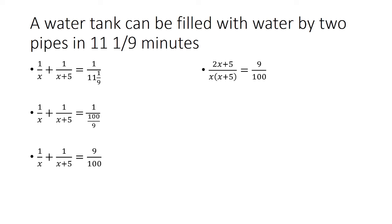Next, we're going to cross multiply. So the 100 is going to multiply the 2x and the 5, and then the 9 is going to multiply the x times the x plus 5. Bringing everything to the right, we have an equation 9x squared minus 155x minus 500 equals 0.